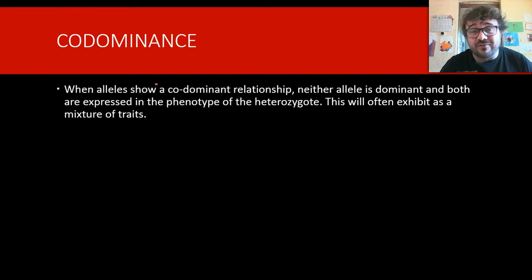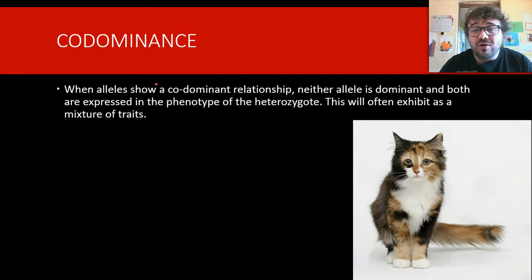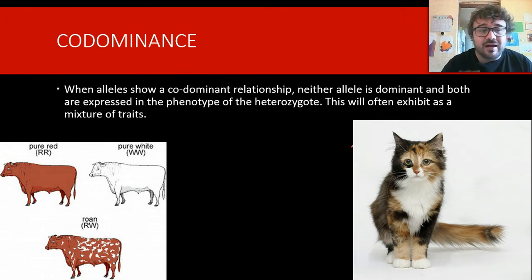So, there was a roan cow on the first slide. That is an example of codominance. Or, the tortoiseshell cat, which is super adorable. And here we have a roan cow, so we can see it's big R, big R, big W, big W, put it together again. R and W, and you get a mixture of white and red, but it is not that intermediate.